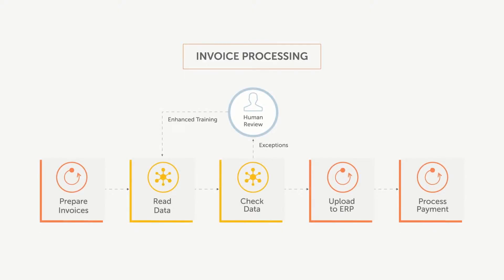Now let us see how the newly trained IQBot will work with RPA bots to automate the process end-to-end. The first step is preparing invoices. An RPA bot collects email attachments into one folder, and another RPA bot uploads them into Cognitive IQBot. IQBot extracts data from invoices and, after validation, saves it to a CSV file. If some data fields don't pass validation, they will be reviewed by a human operator, and those corrections will be used as additional training data.